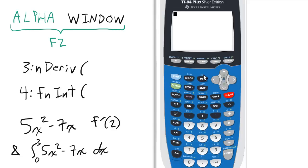For the shortcut menu for derivatives and integrals, we press alpha and then the window key for the F2 function.